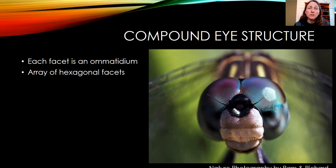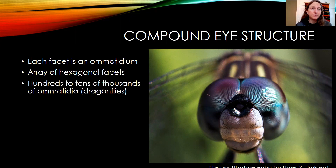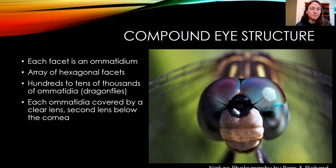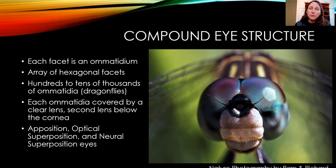Each facet is called an omatidum, and a compound eye is made up of an array of these hexagonal facets that fit together. There can be hundreds or tens of thousands of omatidia in a single compound eye, such as this dragonfly eye. Each omatidia is covered by a clear lens, and there's often a second lens below the cornea as well. There are three different types of compound eyes, and I'll explain the differences among them.